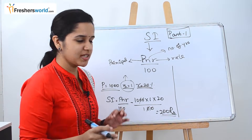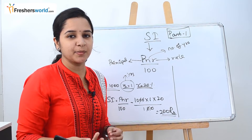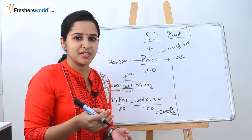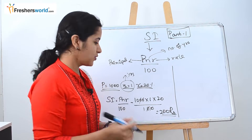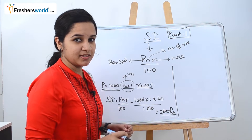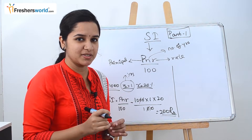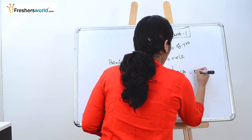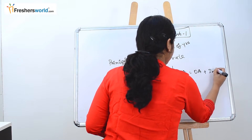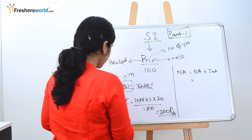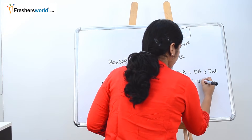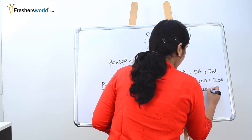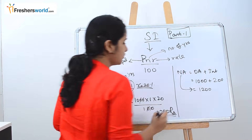Always remember that N is represented in years. If a sum gives you 9 months, you must represent it as 9 by 12. This is where a lot of people make mistakes. Also, new amount equals old amount plus interest.